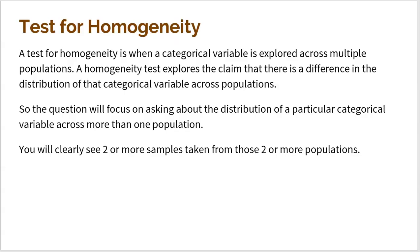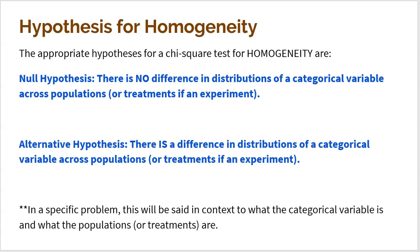The null would be that there is no difference — meaning if 10% of people in the United States have a Ford, then 10% in Canada, 10% in Germany, and 10% in Russia also have a Ford. The alternative is that there is a difference. The question will focus on the distribution of a particular categorical variable across more than one population, and you will clearly see two or more samples taken from those populations. Hypotheses are written in words, not symbols.